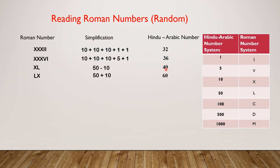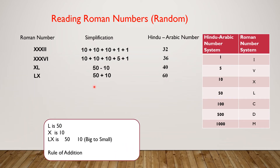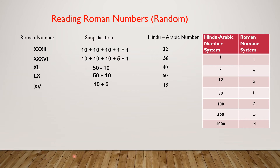LX: simplification 50 plus 10, Hindu-Arabic number 60. L is 50, X is 10. For LX, first we put 50 and then 10 — so we are going from bigger number to smaller number. That's why we use the rule of addition here. XV: simplification 10 plus 5, Hindu-Arabic number 15.